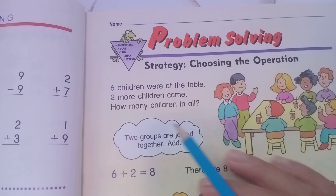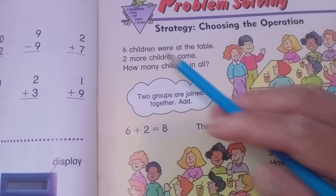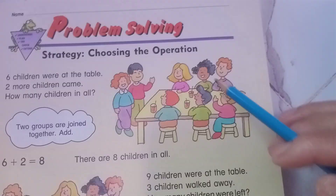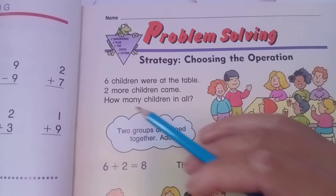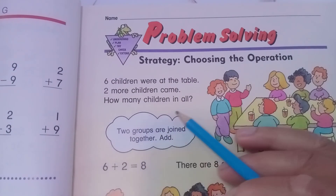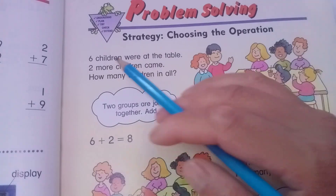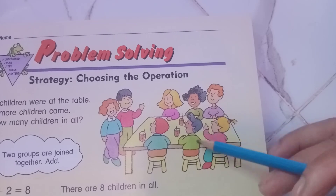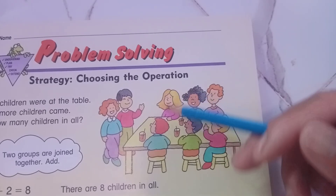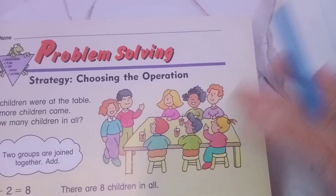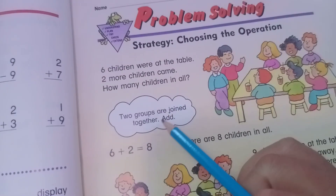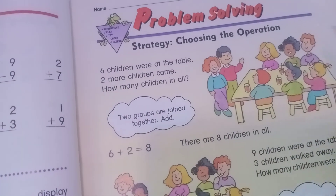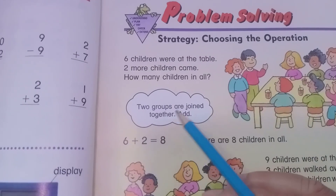You can see six children at the table, and two more children join. Six plus two — one, two, three, four, five, six, plus two — equals eight. Two groups join together.